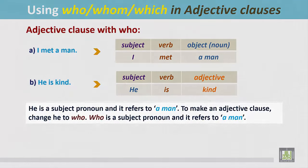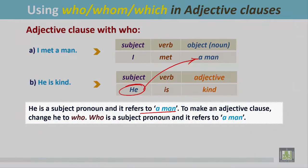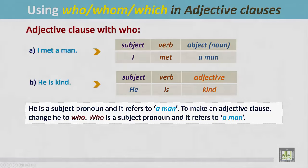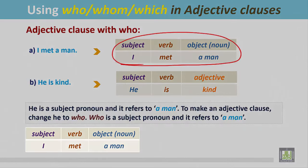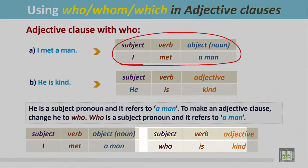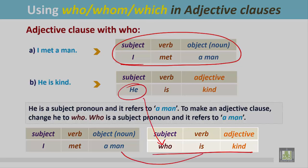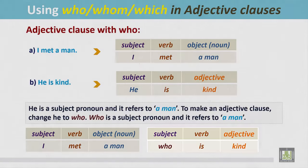So 'he' is a subject pronoun and it refers to 'a man.' To make an adjective clause, change 'he' to 'who.' 'Who' is a subject pronoun and it refers to 'a man.' See the structure — how we join. Write the first sentence: 'I met a man who is kind.' This part then modifies the noun.